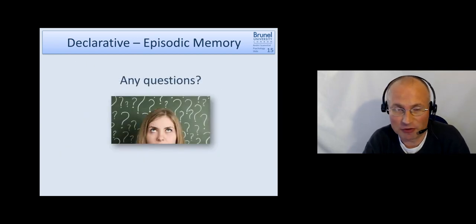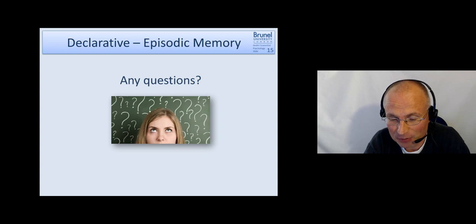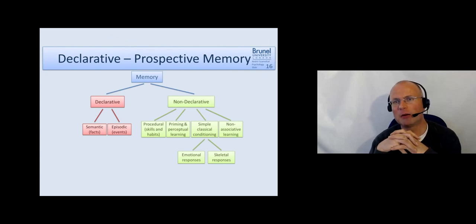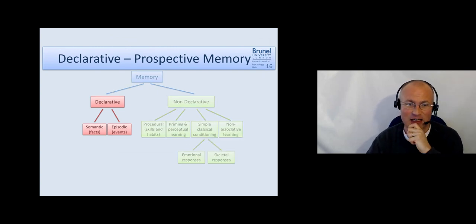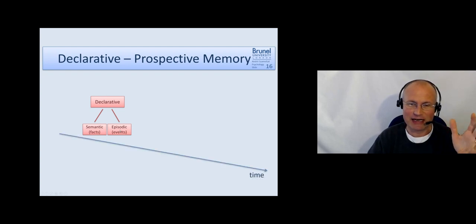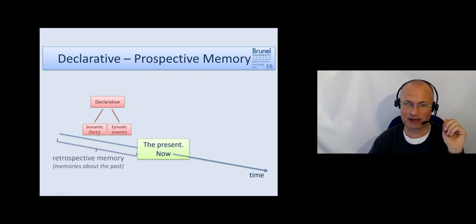Okay, if you have any questions on episodic memory, because we come to an end of episodic memory, then please post it in the forum. We will now continue, because it's just very brief, with prospective memory. So let's just focus on this declarative memory. We have semantic memory and we have episodic memory we just spoke about. When we now place that on a timeline and we are right here, then this memory is in the past. It's about events which have happened to us. It's about facts we have learned in the past. So this is called retrospective memory—memories about the past.